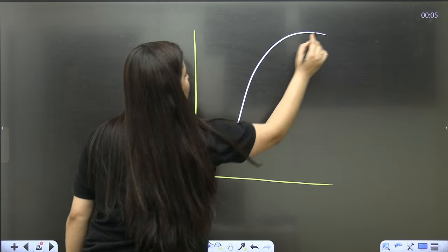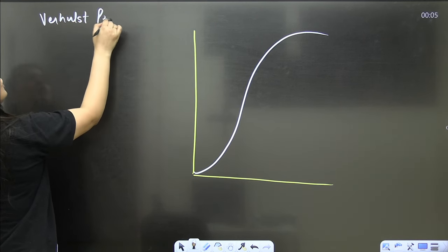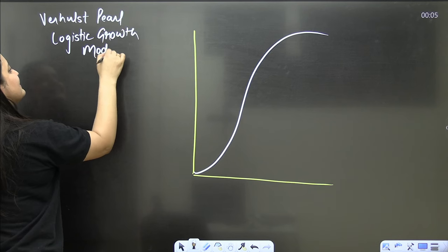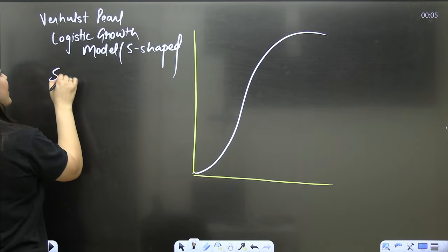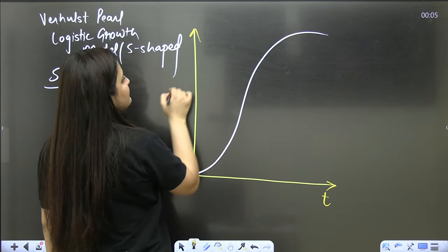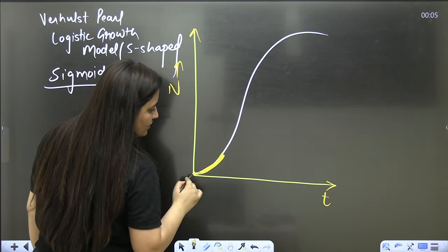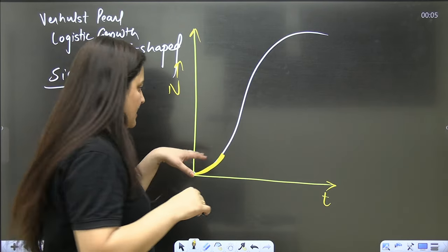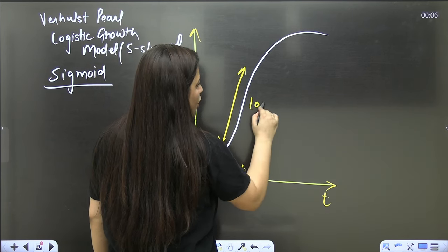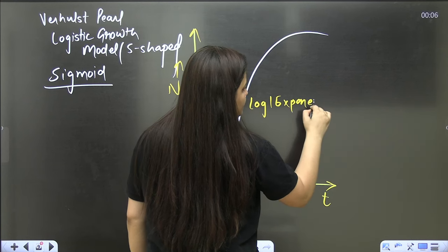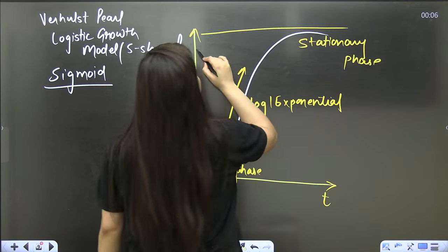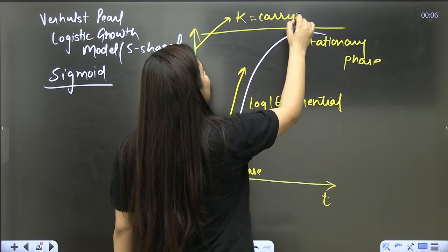The other growth model is the Verhulst-Pearl logistic growth model — the S-shaped or sigmoid growth model. Initially there is a lag phase when the population needs to acclimatize, then comes the log phase (exponential phase) when growth is rapid, and then the stationary phase. Here we consider K, the carrying capacity.